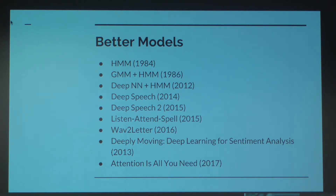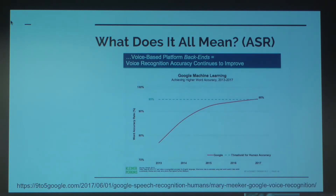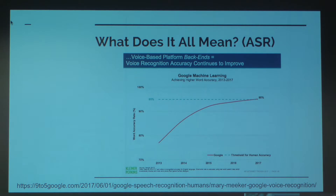So where does this leave us — what do all these models, all this data, and all this compute really mean for us? As of last year, Google and others have actually achieved human-level performance in terms of transcription, and we've seen countless examples — for instance, the engine that powers Google Duplex and Google Home.